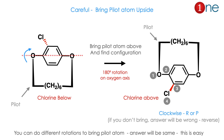Always bring the pilot atom to the upside — above the plane. If the pilot atom is given below the plane, you must rotate the molecule on the oxygen axis to bring it above. While rotating, chlorine moves from below the plane to above the plane. Once you do this conversion, the normal priority rules apply. Find the pilot atom's plane, assign priorities, and determine clockwise or anticlockwise direction.